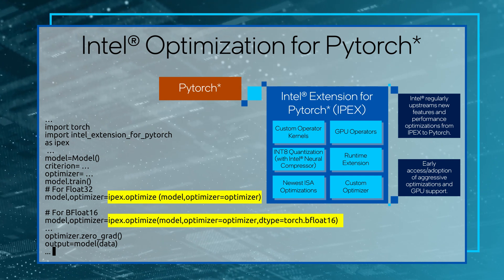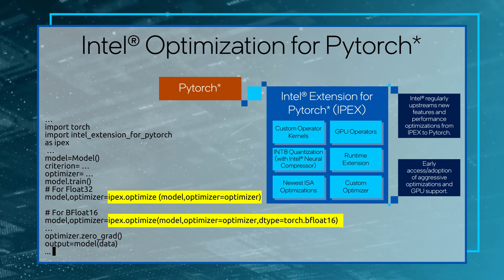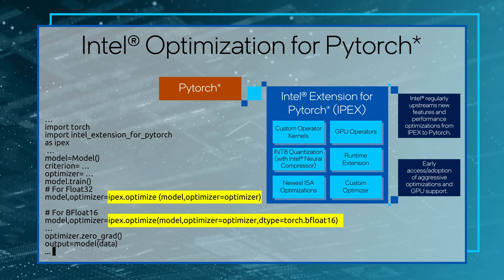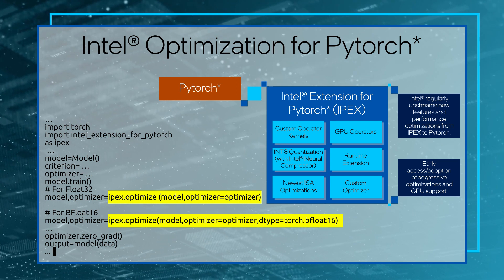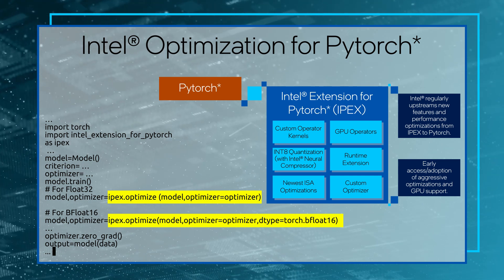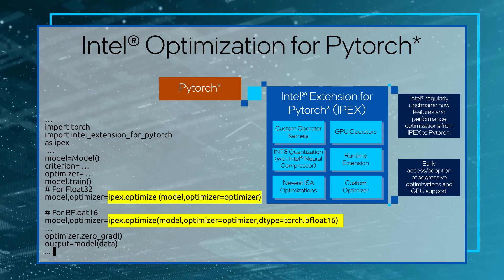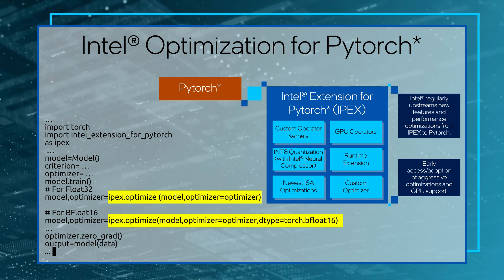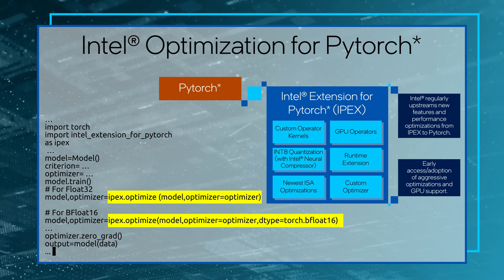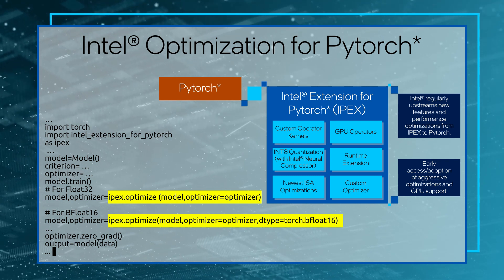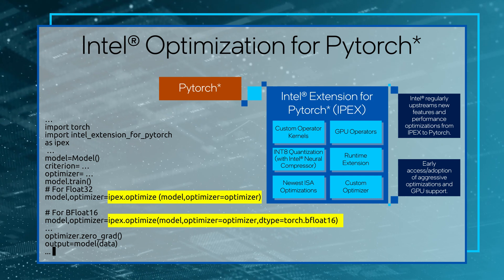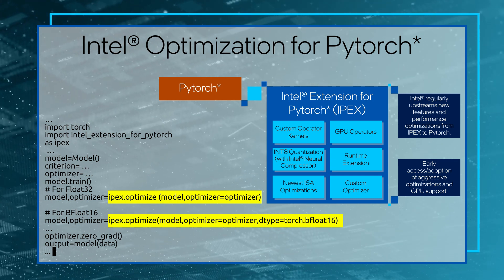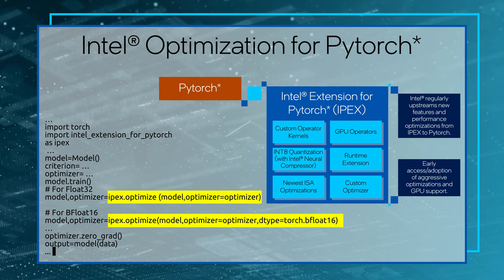For example, for some specific types of models like transformer-based models or large language models, Intel implements optimized custom operator kernels that are heavily used in these models and thus improve the performance of these models significantly. Intel optimization for PyTorch also enables INT8 quantization for optimizing a model in size and performance, and it can invoke Intel Neural Compressor features internally for quantization as well.